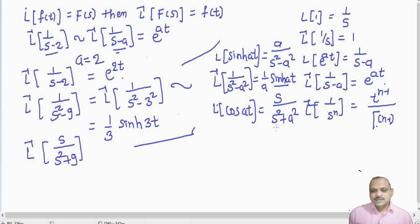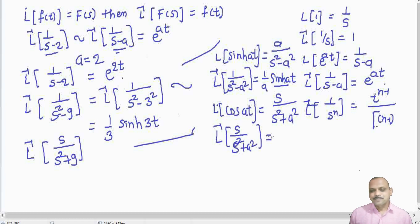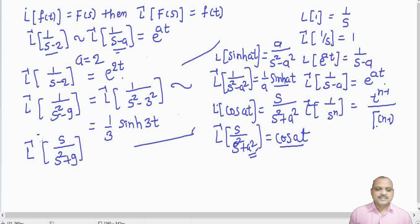So L⁻¹{s/(s²+a²)} = cos(at). Comparing s²+9 with s²+a², we see that a = 3. Therefore, L⁻¹{s/(s²+9)} = cos(3t).